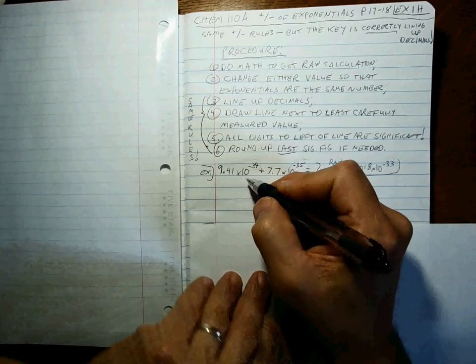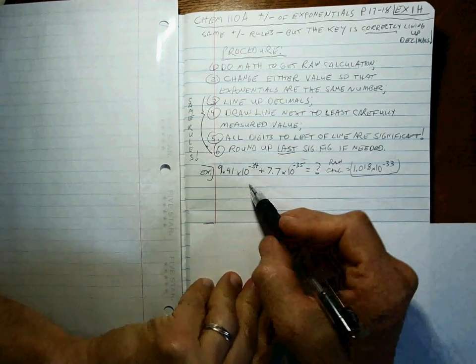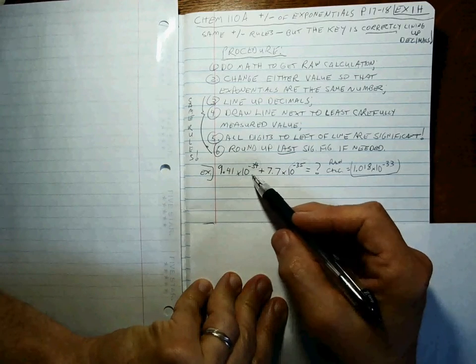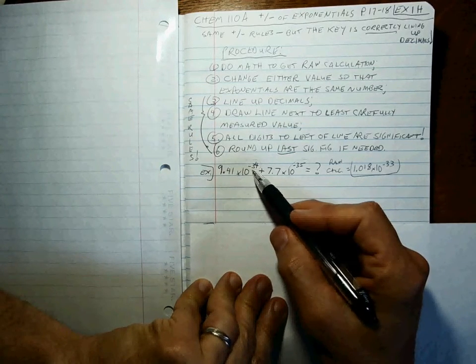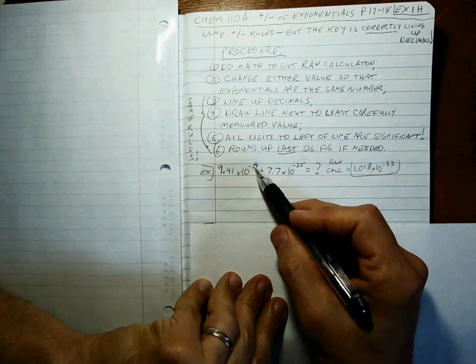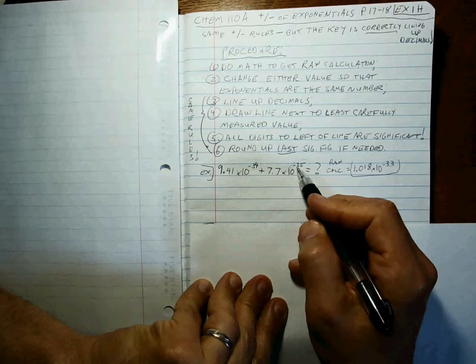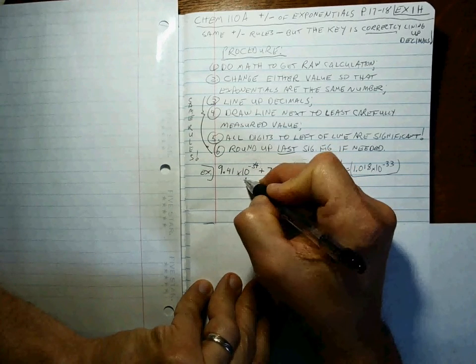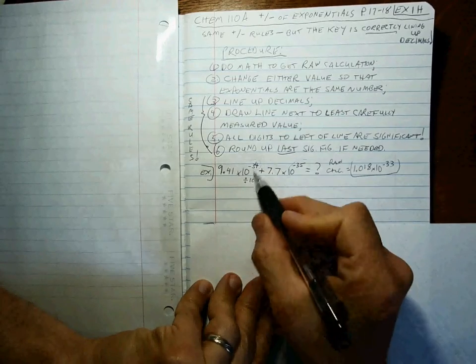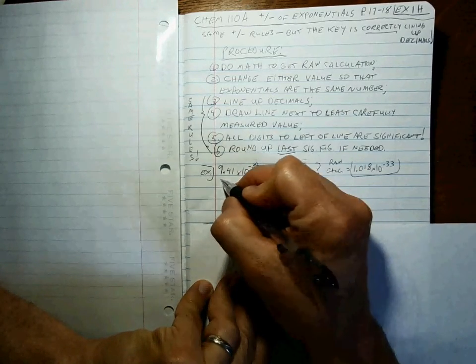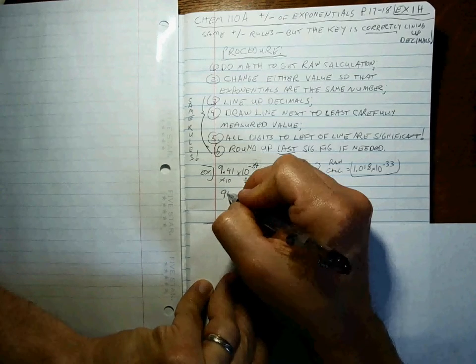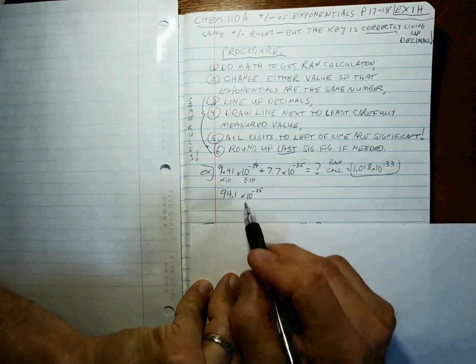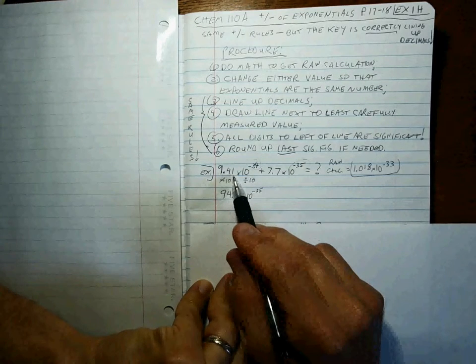And it doesn't really matter which one you do. You'll still get the right answer. Let's change this to 10 to the minus 35. Okay, so if you remember back when we were doing standard exponential form, we were like multiplying by 10 and dividing by 10 to make numbers bigger and smaller. We have to do the same thing here. A number that's times 10 to the minus 34, is that bigger or smaller than a number times 10 to the minus 35? This is a key. You have to be able to figure this out. 10 to the minus 34th is bigger. So we're going to divide this part by 10. If we divide that part by 10, we have to multiply that part by 10 times 10. So 94.1 times 10 to the minus 35 is exactly the same value and same sig figs as 9.41 times 10 to the minus 34.